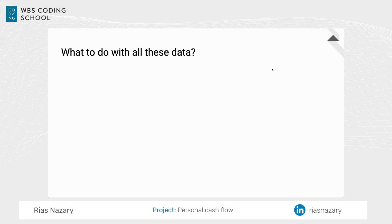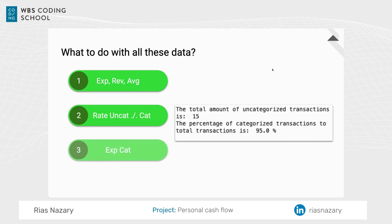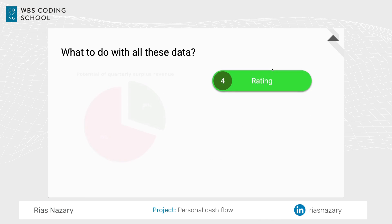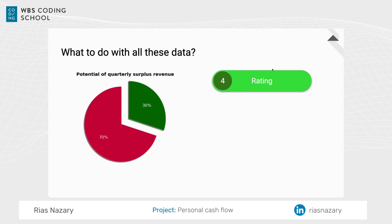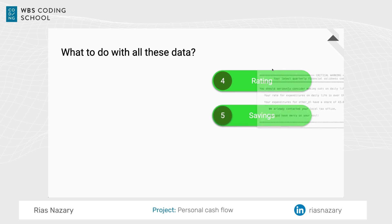So what to do with all this data? Next to typical figures, we counted the ratio of uncategorized to categorized transactions, a pie chart with all your expense categories, and another chart which shows your real consumption by excluding your savings. So if you consumed more than 70% of your income, the code will look at your daily life expenses. If they're also too high, the computer will find the subcategory with the highest cost and suggest you make some cuts there as a saving measure.